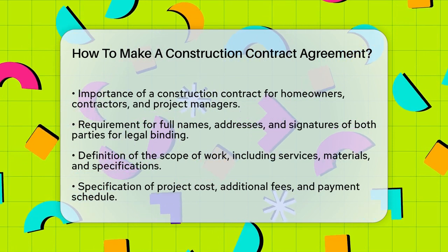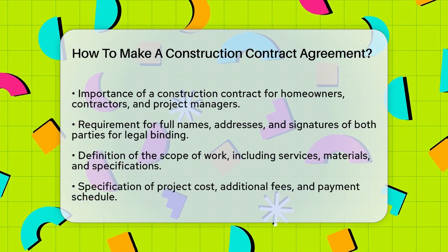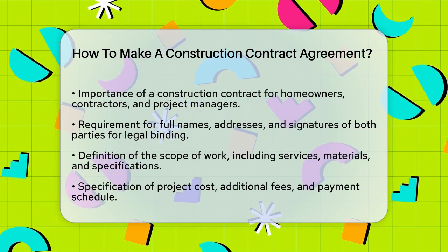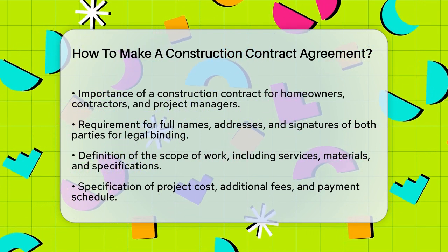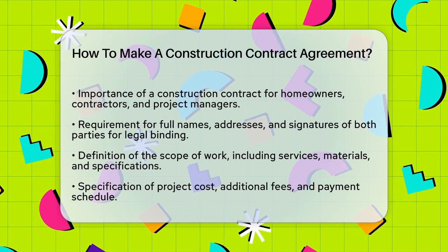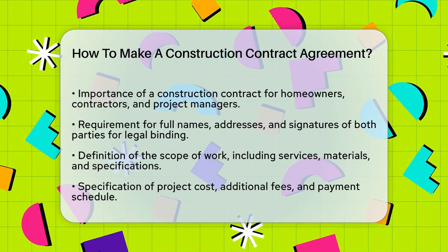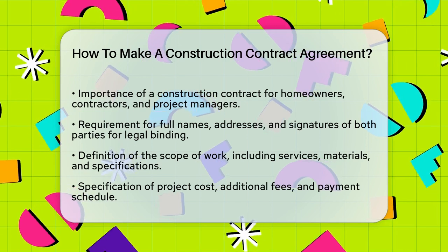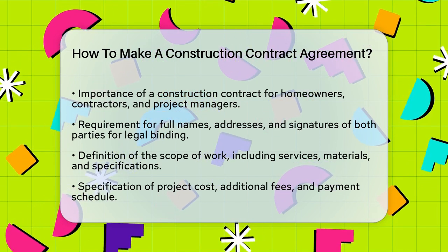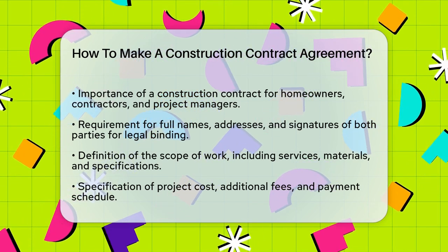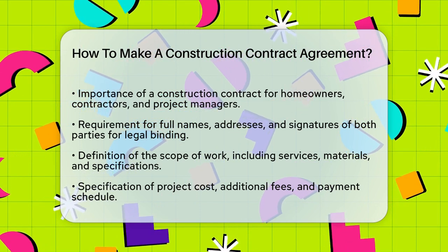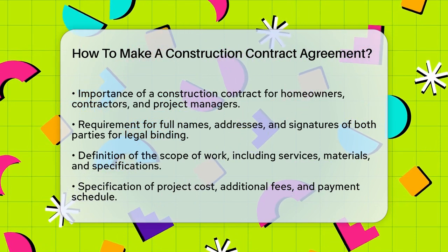First, let's start with the basics. A construction contract needs to include the full names, addresses, and signatures of both parties involved. This might seem obvious, but it's essential for making the contract legally binding. Without these details, the contract won't hold up in court if there are any disputes.